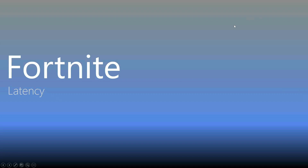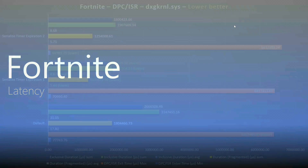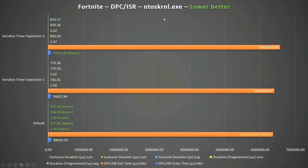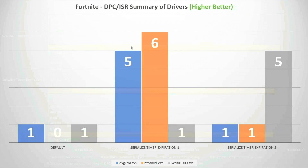Looking at the results for ISR/DPC latency: for the DPC/ISR kernel, things are better with serialized timer expiration value one; for the EndOS kernel, things are better by default; for WDF, things are better with serialized timer expiration value two. Overall, based on the results, we could say things are best with serialized timer expiration enabled.